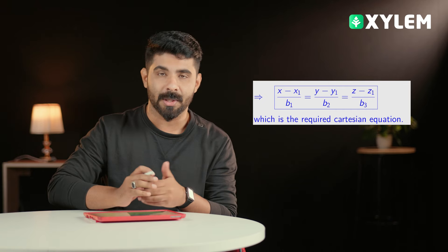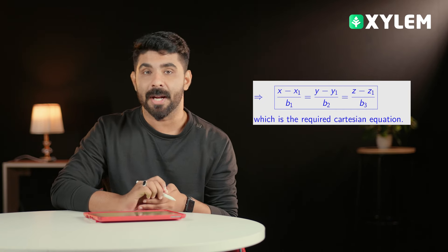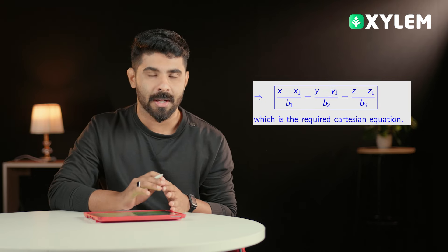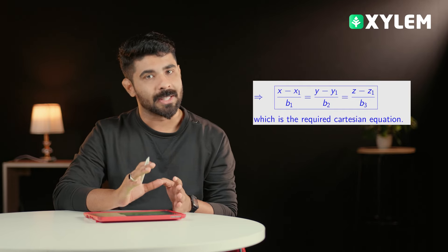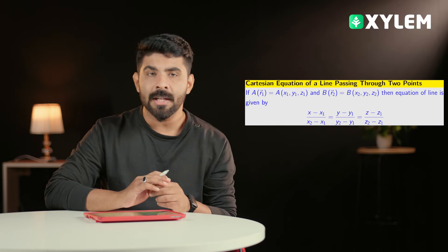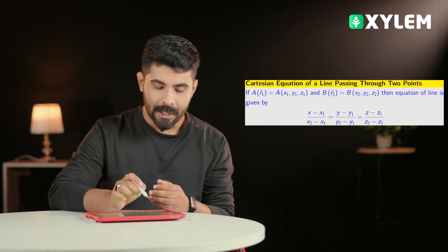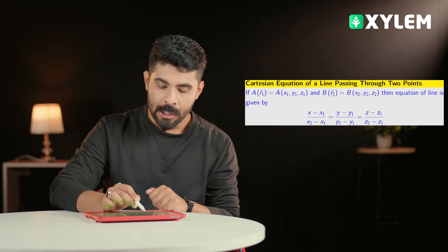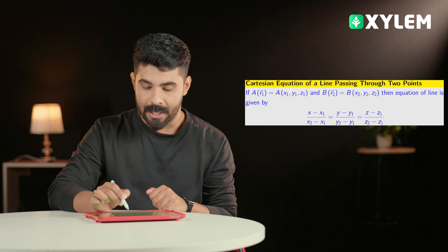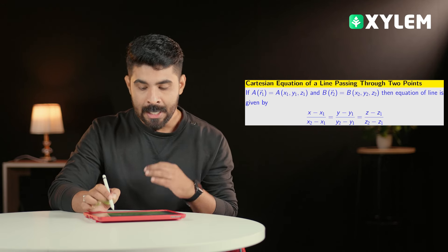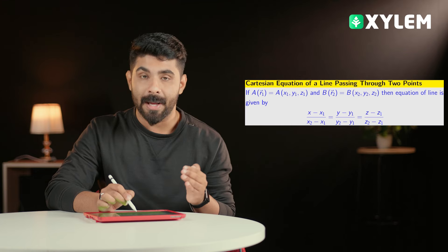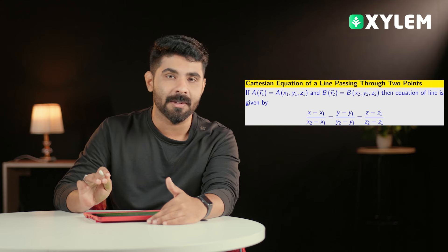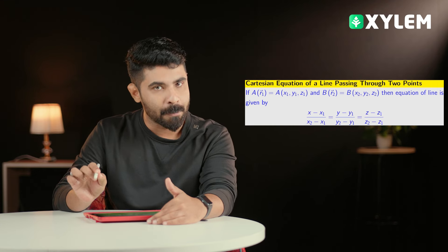The Cartesian Equation of a line through a point is: (x minus x1) divided by b1 equals (y minus y1) divided by b2 equals (z minus z1) divided by b3. For a line passing through two points with coordinates (x1, y1, z1) and (x2, y2, z2), the equation is: (x minus x1)/(x2 minus x1) = (y minus y1)/(y2 minus y1) = (z minus z1)/(z2 minus z1).